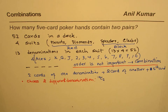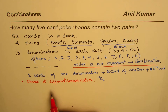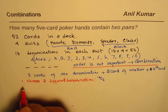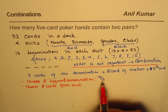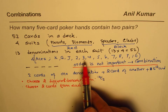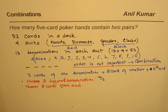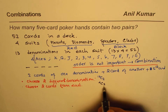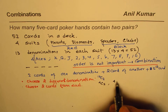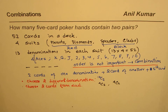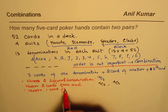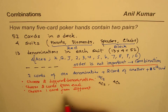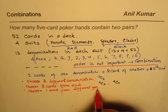Once you select these two different denominations, you need to choose two cards from each. Each denomination has four cards since there are four suits. So from each group of four we select two, giving 4C2 for the first denomination and 4C2 for the second denomination.